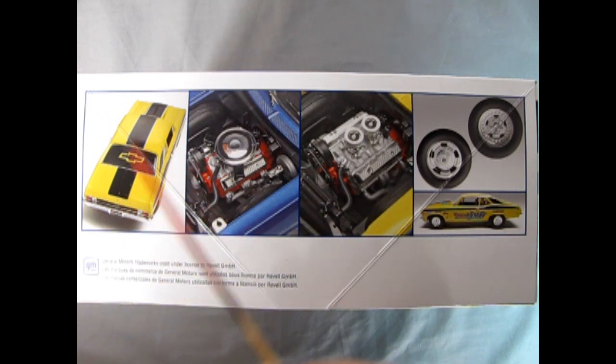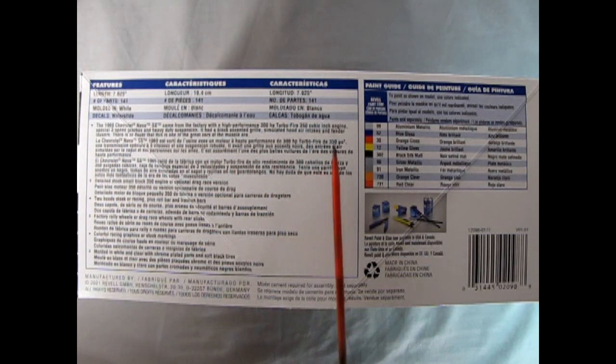On this side of the box we can see all the really awesome features of this model kit: the amazing decal stripe package, the stock engine, the racing engine, the stock wheels, the racing wheels and the racing side profile.